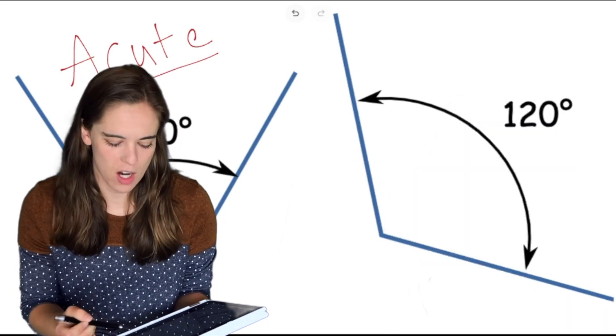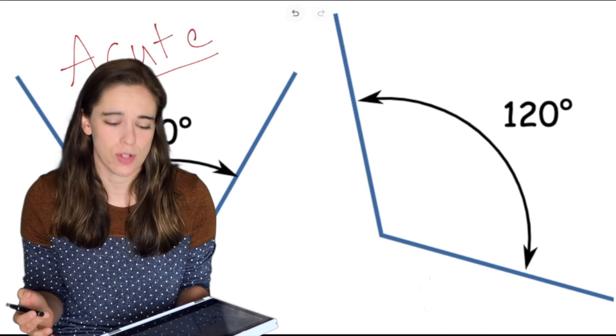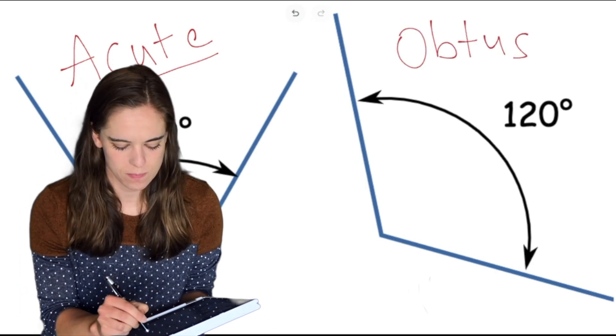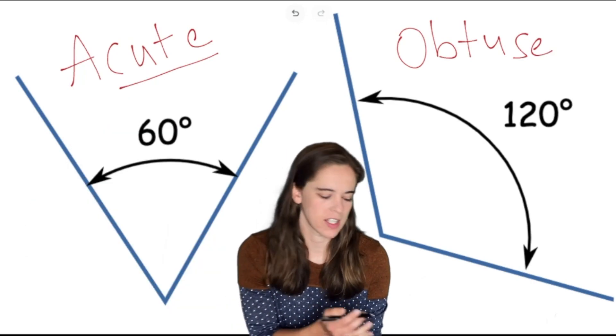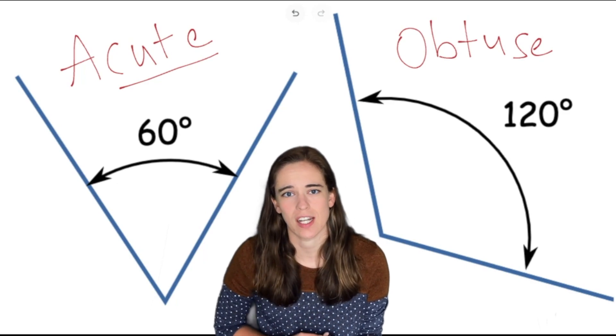On the other hand when we have a 120 degree angle because that is larger than 90 degrees we call this an obtuse angle. So we have acute angles anything less than 90, obtuse is anything larger than 90.